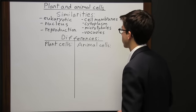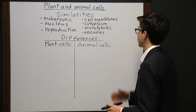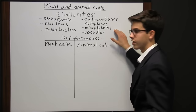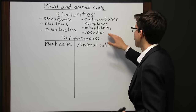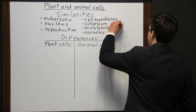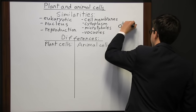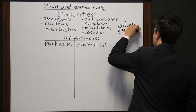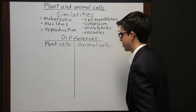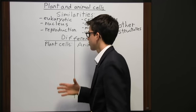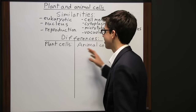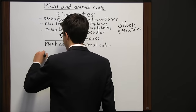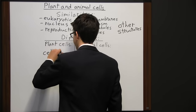They also share other structural similarities: both have a cell membrane, cytoplasm, microtubules as part of their cytoskeleton, vacuoles, and many other structures. One huge difference is that plant cells have a cell wall — animal cells have no cell wall. Plant cells have a cell wall made of cellulose that can handle high levels of pressure within the cell, which can occur when liquid enters a plant cell.